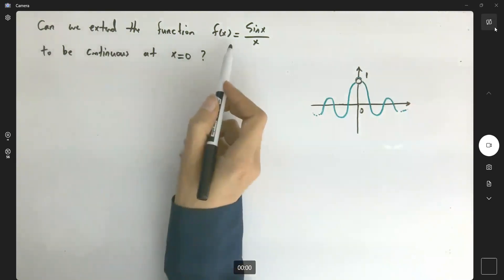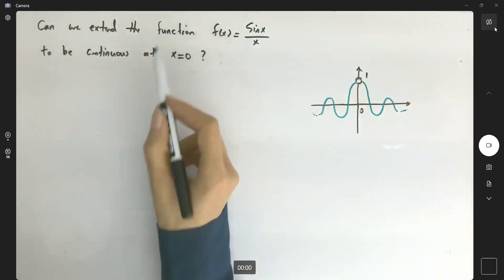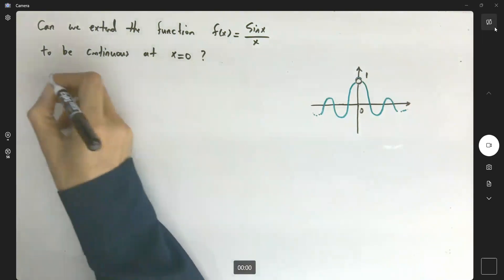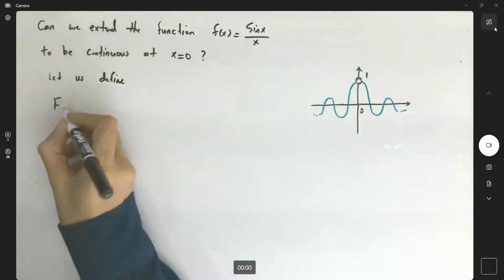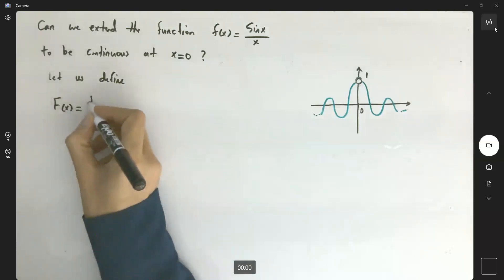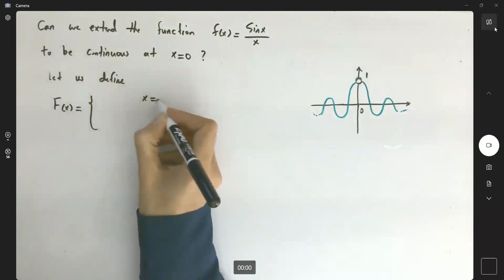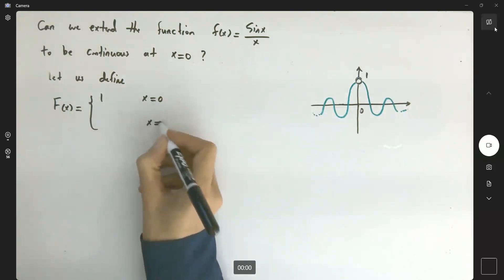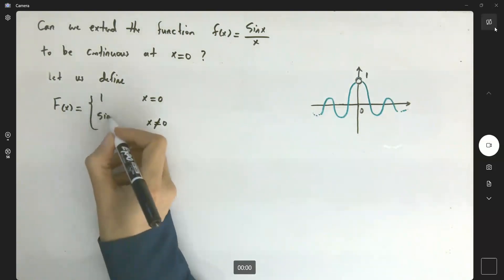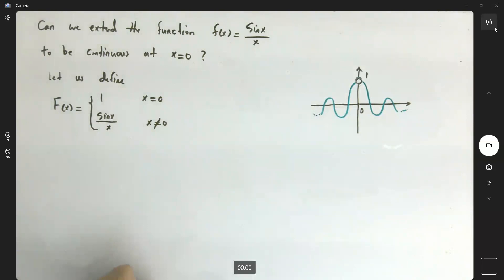To extend this function to be continuous, let us define the piecewise function F(x) as follows: when x = 0, we define F(x) = 1; when x ≠ 0, F(x) = sin(x)/x.